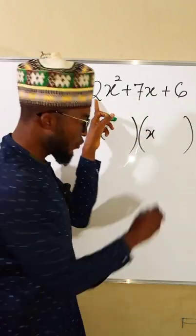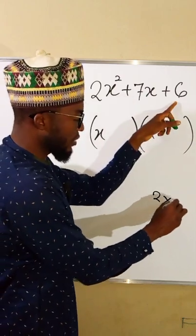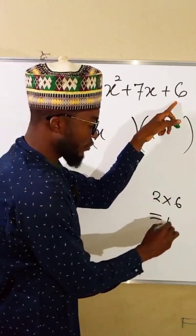Take the leading coefficient 2 and multiply it with the constant, which is 6, and this is equal to 12.